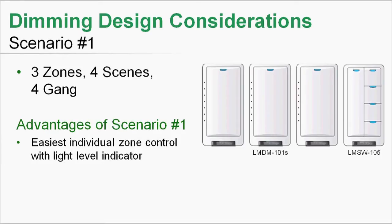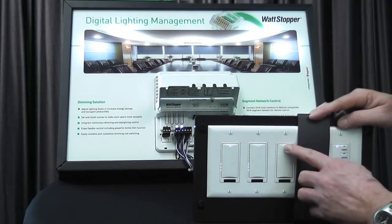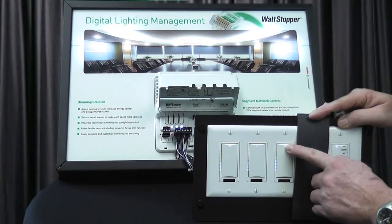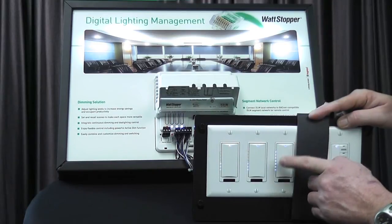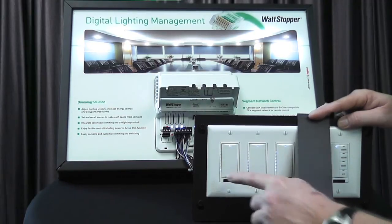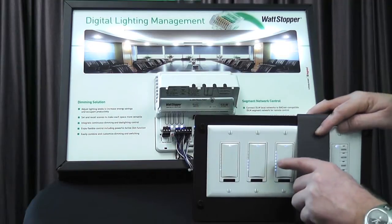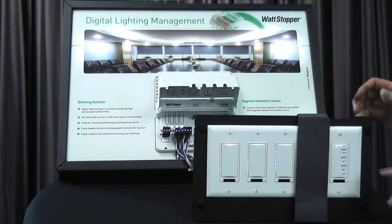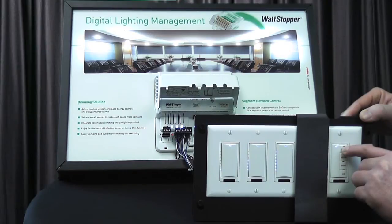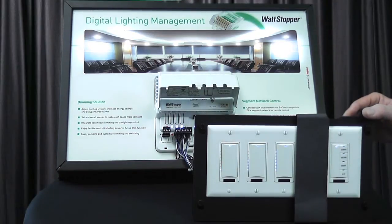It's the easiest individual zone control with light level indication. It's very easy to see what my light levels are. I can clearly put my sconces at 50%, ramp them up to 100. Really easy to see where they are. It's also the easiest way to set scenes. Let me just adjust these light levels so that I'm at low, medium, and high.